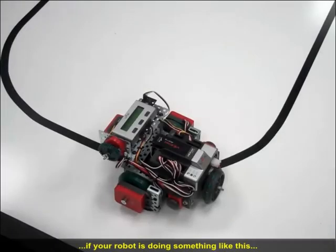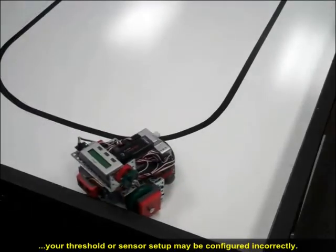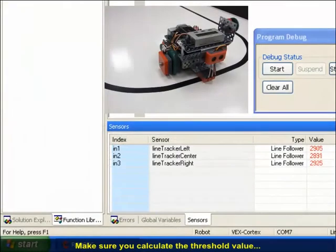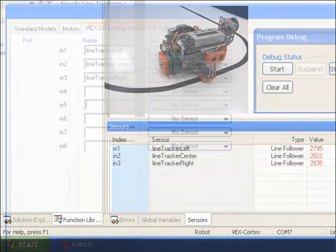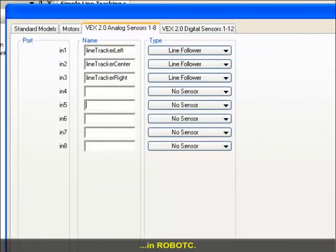As a side note, if your robot is doing something more like this, or this, your threshold or your sensor setup may be configured incorrectly. Make sure you calculate the threshold value in the lighting environment the robot will be operating in, and that your robot configuration matches the motors and sensors configuration in Robot C.